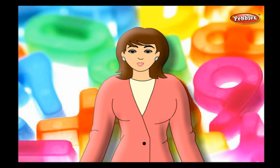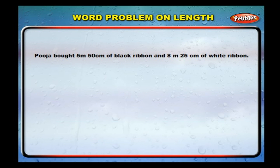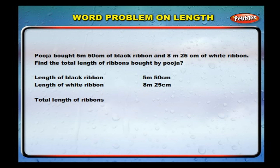Let us now do a word problem on length. Pooja bought 5 meters 50 centimeters of black ribbon and 8 meters 25 centimeters of white ribbon. Find the total length of ribbons bought by Pooja. Length of black ribbon: 5 m 50 cm. Length of white ribbon: 8 m 25 cm. Total length of ribbons: 13 meters and 75 centimeters.